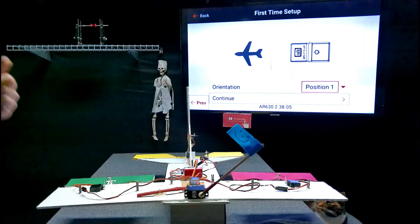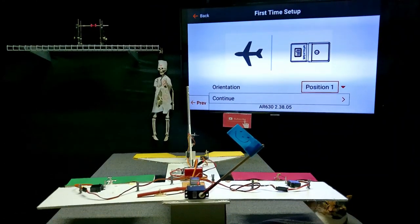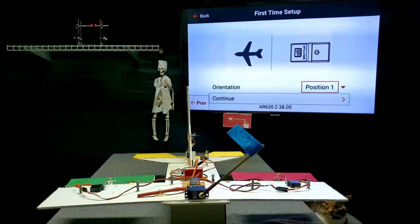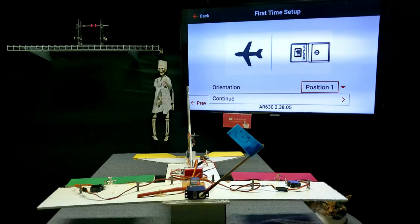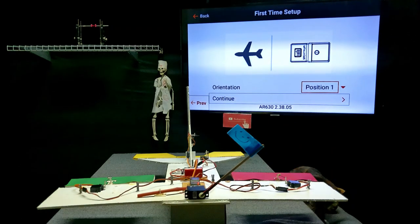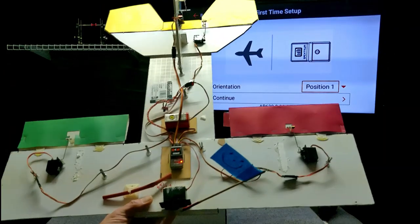All right, now it has decided how our receiver is mounted. And we have it to the pins facing to the rear. The Spectrum logo is faced up. The bind button is towards the front, just like it is on our plane.